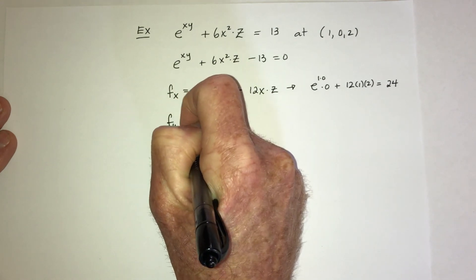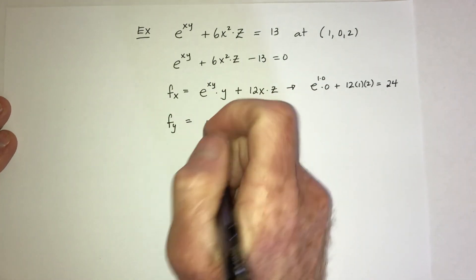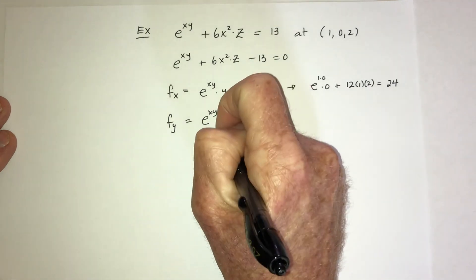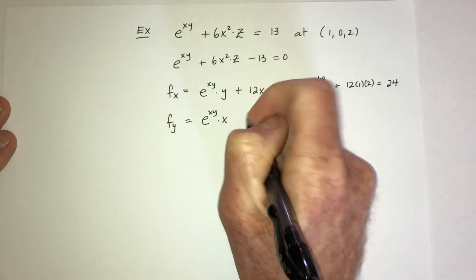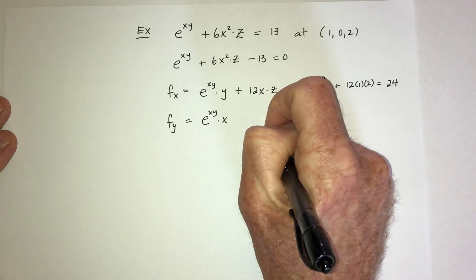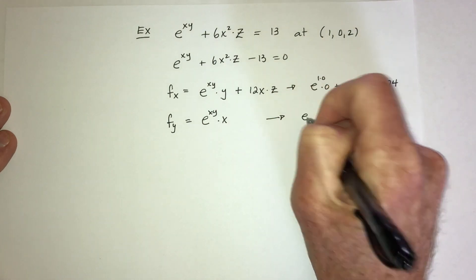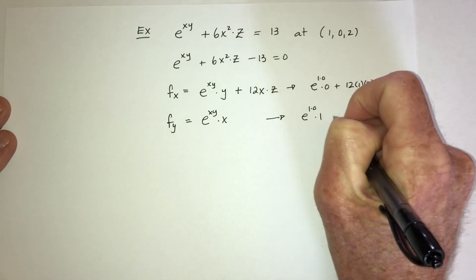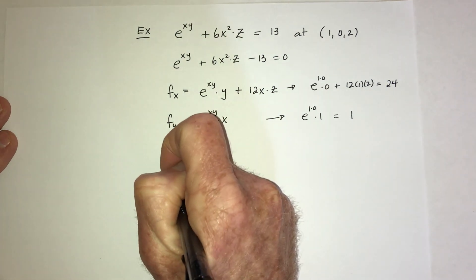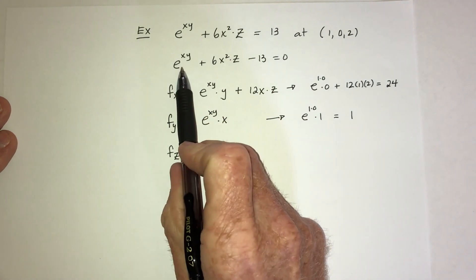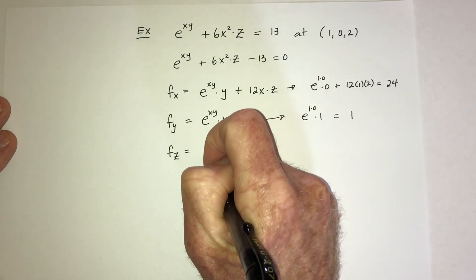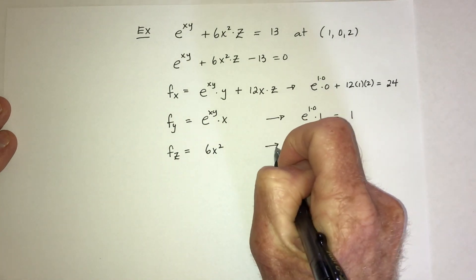Take the derivative with respect to y: it's e^(xy) times x. The 6x²z term has no y, so its derivative is 0. Plugging in (1, 0, 2): e^(1·0) times 1 = 1, so Fᵧ = 1. For the derivative with respect to z: e^(xy) has no z so its derivative is 0, and the derivative of 6x²z is 6x². Plugging in x = 1 gives F_z = 6.